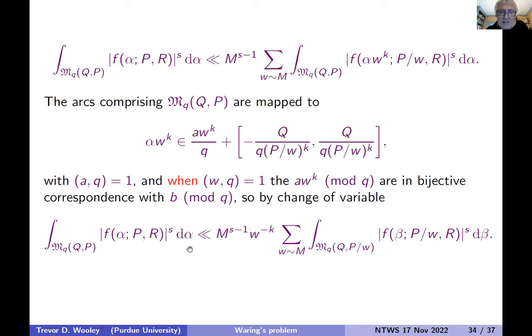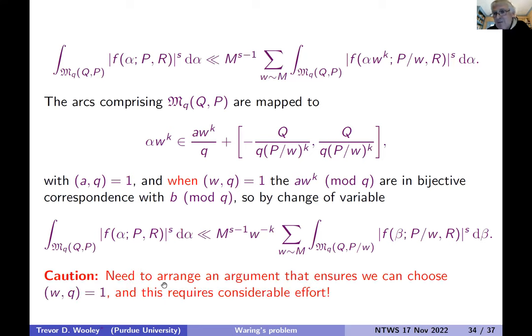So this looks very nice. But if a and q are coprime and w and q are coprime, then I'm just permuting the reduced residues mod q when I multiply by w to the k. So what I'm actually doing is mapping the original set of arcs under the scaling to a new set of arcs which correspond nicely to the shorter length of the exponential sum. And I can make a change of variable in the integration to remove the alpha w to the k and make it a beta. And that gives me a w to the minus k here.